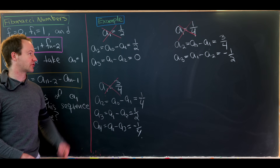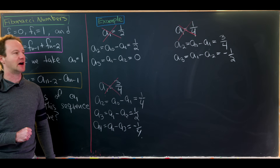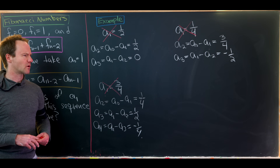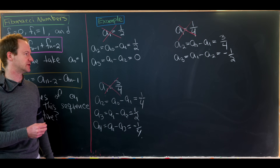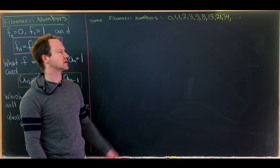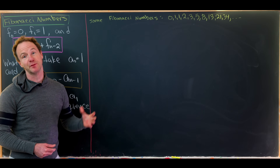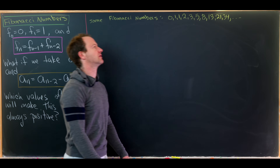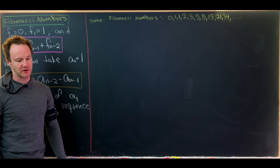We tried three choices for a_1 and none of them worked — they all quickly reached a negative or zero value. Now let's do a more proper exploration to see if we can find any value of a_1 that keeps the sequence always positive. For reference, here are the first several Fibonacci numbers: 0, 1, 1, 2, 3, 5, 8, 13, 21, 34, where each term is the sum of the previous two.